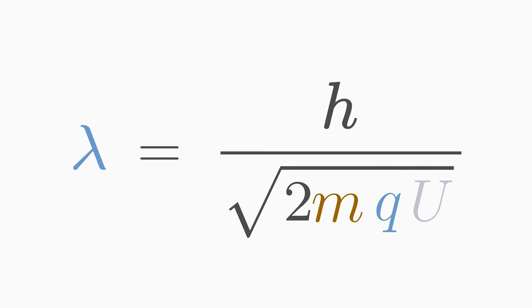All the constants h, m and q of an electron are known. You can adjust the voltage at the voltage source and thus increase or decrease the de Broglie wavelength of the particle.